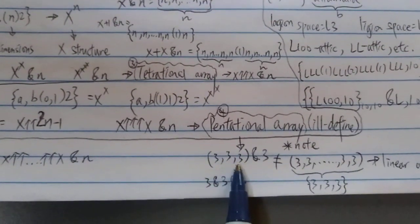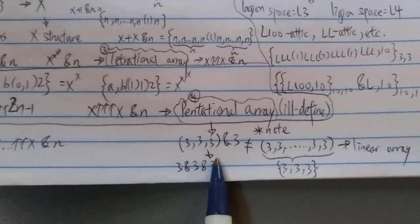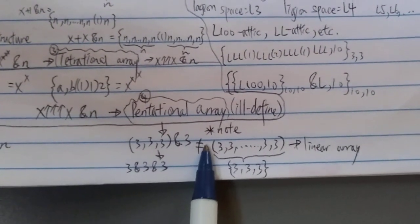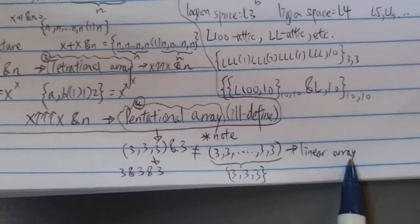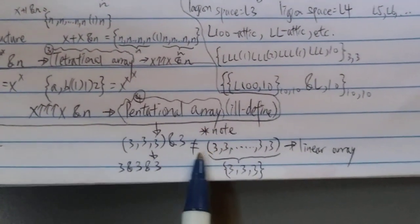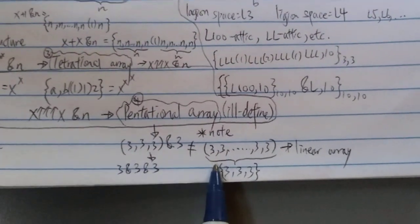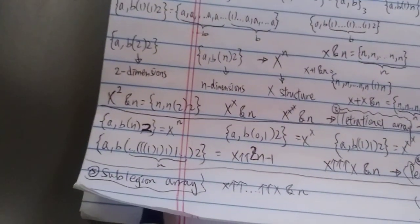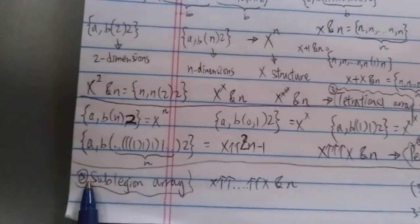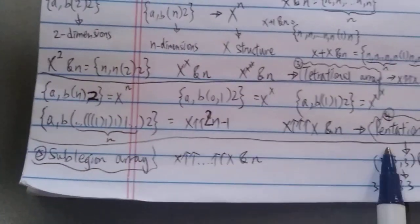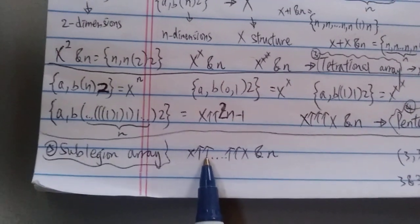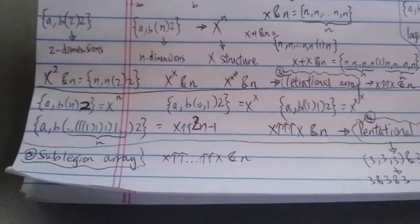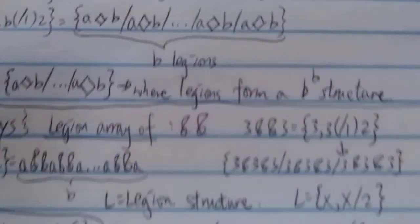For the pentational array: {3,3,3} means three & three & three — but it does not equal three-three-three number of terms of three; it's way bigger than that. After pentational you have sub-legion array, which is also ill-defined — something involving a number of up-arrows — heptation or as many up-arrows as you want.